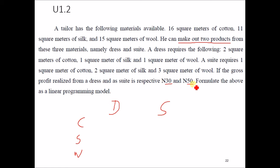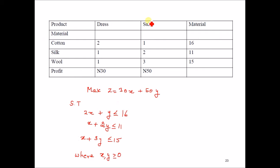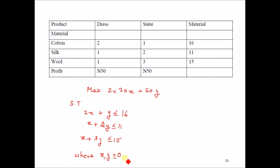We formulate the problem in tabular form with columns for dress and suit, and rows for cotton, silk, and wool. The values are: cotton row — 2, 1, available 16; silk row — 1, 2, available 11; wool row — 1, 3, available 15. The objective function is Z = 30X + 50Y. Since it is a maximization problem, the constraints are: 2X + 1Y ≤ 16; 1X + 2Y ≤ 11; 1X + 3Y ≤ 15; where X, Y ≥ 0.